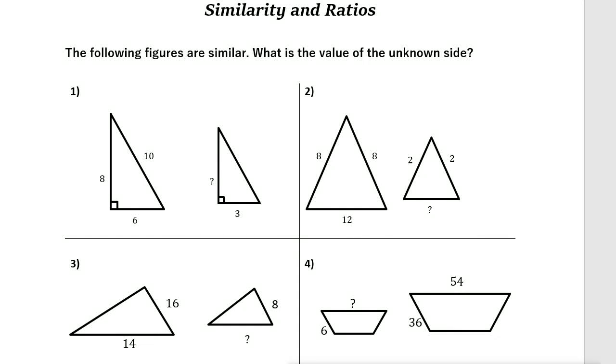Similarity and ratios: two or more figures are similar if the corresponding angles are equal and the corresponding sides are in proportion. For example, here you have two triangles, and if these two are similar, then we can write a proportion and solve for the unknown side.